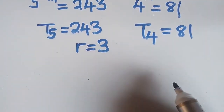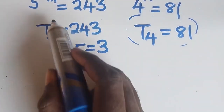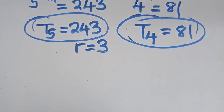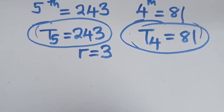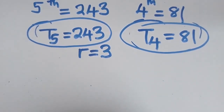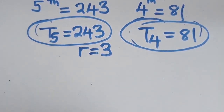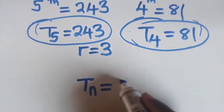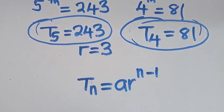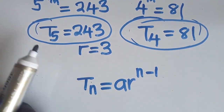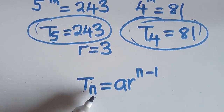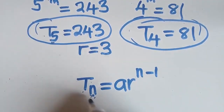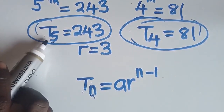Now, finding the first term. We are going to use the formula for the nth term, which is T_n = A · R^(N-1). Where there is N, you put 5 everywhere, because T5 is given.